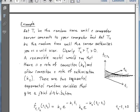We're going to let T1 be the random time until a computer server connects to your computer. And we're going to let T2 be the random time until the server authorizes you as a valid user. Obviously, you cannot be authorized until you have connected. And so T2 has to be greater than T1, and T1 is a waiting time, so it's going to be greater than zero.